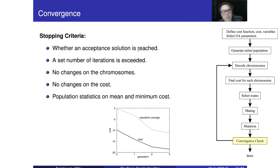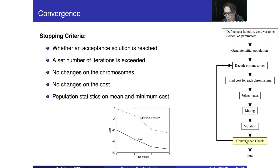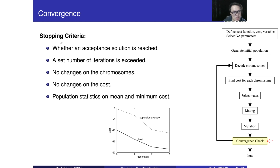Now we are going to look at the convergence issue. That is, when we perform all the tasks right here and get to this point, whether we are going to repeat the whole process again or not. So this is the checking of convergence — that means we are talking about when to stop. That is the stopping criteria.